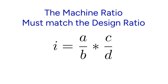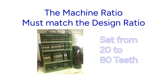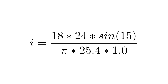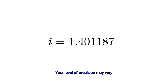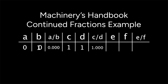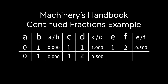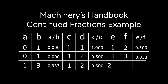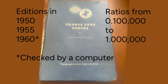Again, a very simple concept — seemingly easy. Normally change gears come in with these machines, somewhere between 20 and 80. So let's put some real numbers in here and get the ratio. One way to solve it is with Machinery's Handbook using continued fractions. This diagram shows how those numbers flow when you're chasing it down. You can look at the book, and this diagram might help you run your calculations. This is something you can put in Excel and get very close approximations.